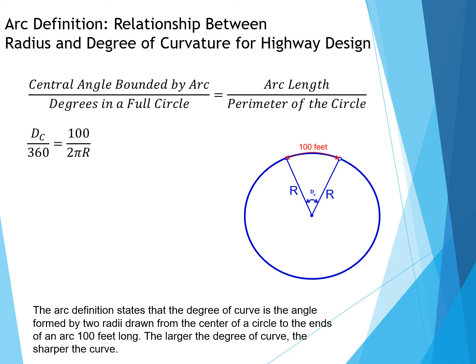Looking at this equation, if we take the general parameters, we have the degree of curve divided by 360 degrees in that circle. So we have Dc over 360 equal to 100, that's our arc length in feet, divided by 2 pi R, which is the perimeter of the circle.